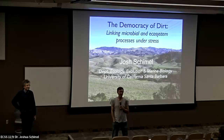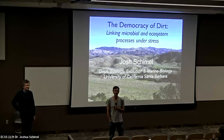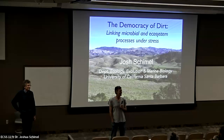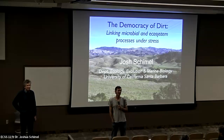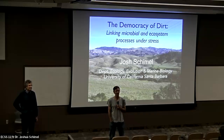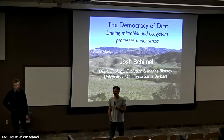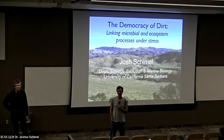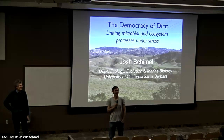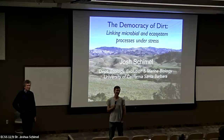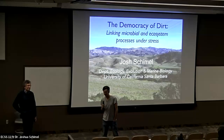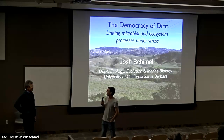Dr. Schimmel grew up in New York City, then moved to the wilds of northern Vermont to study at Middlebury College, before continuing his PhD work with Mary Firestone in Berkeley, then postdocs in Aberdeen and Michigan State, before working at the University of Alaska Fairbanks for six years, then moving to University of California, Santa Barbara, where he's been since. He's been a department head, now an associate dean. He has published over 200 papers, approaching 50,000 citations, and has a top-selling book on writing on Amazon. Today he'll be talking to us about linking microbial and ecosystem processes.